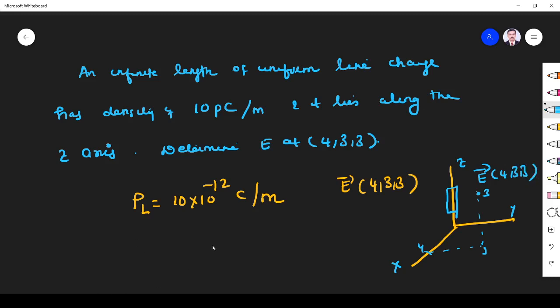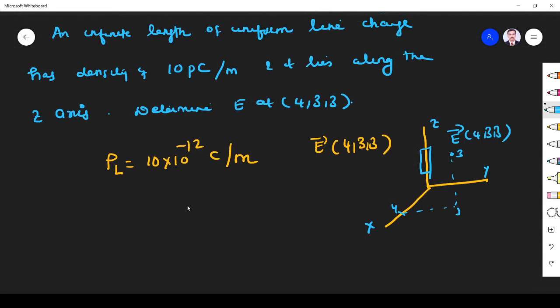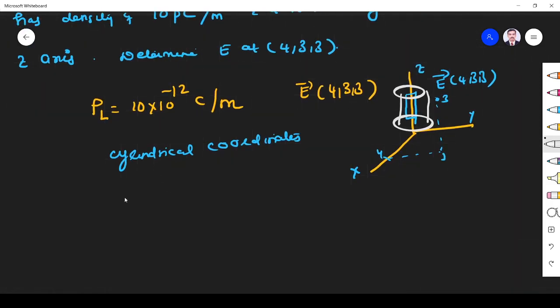Whenever we work with line charge, we use cylindrical coordinate system. Why? Because line charge has symmetry with respect to a cylinder. When the cylinder radius tends to zero, it becomes a line. So it's easier to work with cylindrical coordinates than Cartesian coordinates.